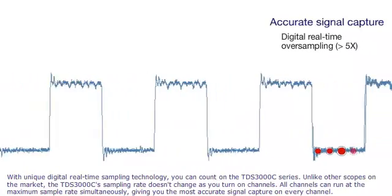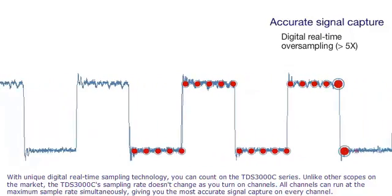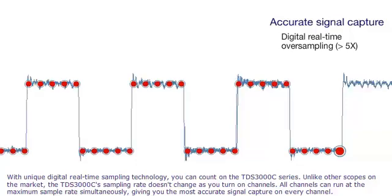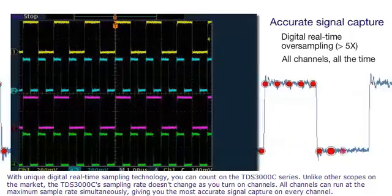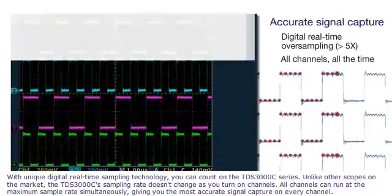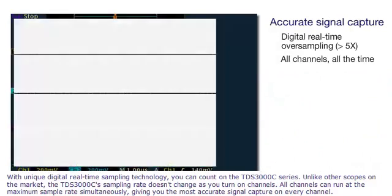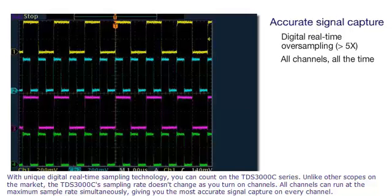With unique digital real-time sampling technology, you can count on the TDS 3000 C-Series. Unlike other scopes on the market, the sampling rate doesn't change as you turn on channels. All channels can run at the maximum sample rate simultaneously, giving you the most accurate signal capture on every channel.